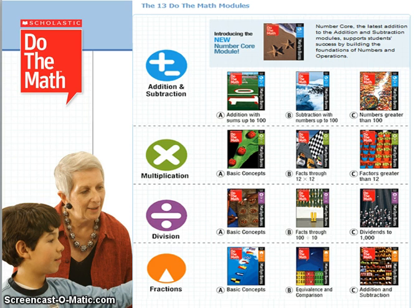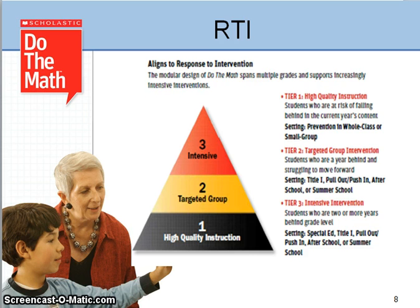Do the Math is organized into 13 scaffolded modules that focus on whole number and fluency with fractions. Every module includes a series of 30 minute step-by-step lessons. The modular design gives the program the flexibility to span multiple grades. It gives students who are at risk of falling behind or have already fallen behind a chance to catch up and keep up by focusing on building foundations with whole numbers and fractions. Do the Math prepares students for success with higher-level mathematics, carefully and intentionally scaffolding the four core topic areas — addition and subtraction, multiplication, division, and fractions — into three or four progressive modules. Do the Math supports flexible delivery of instruction across all tiers of a Response to Intervention (RTI) implementation.